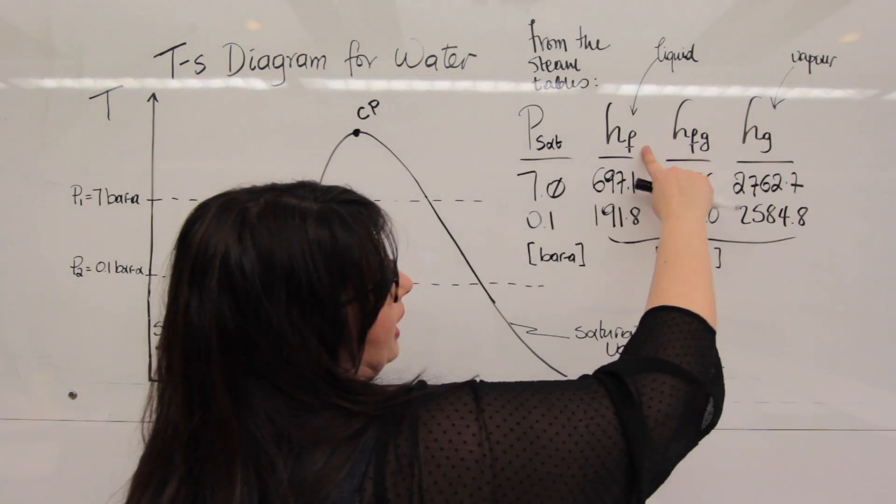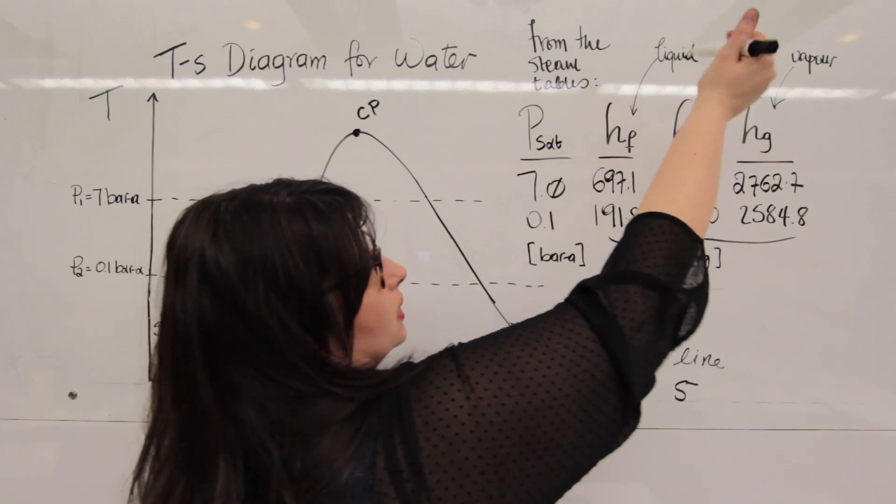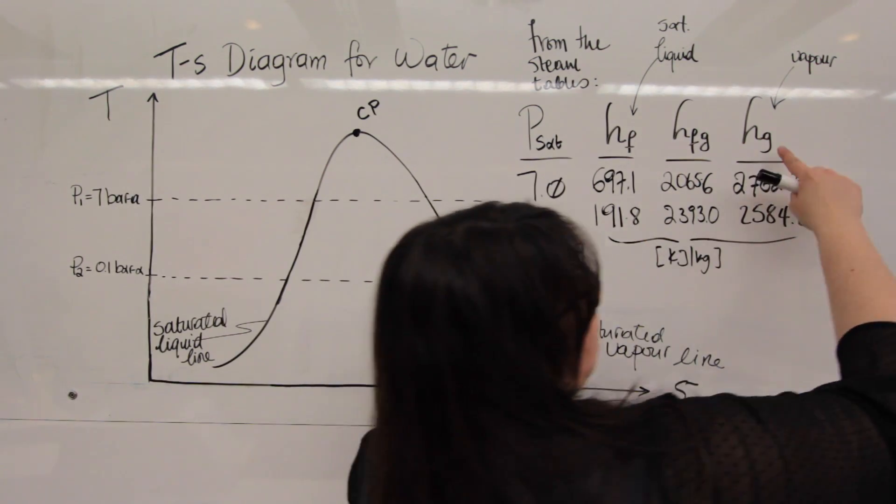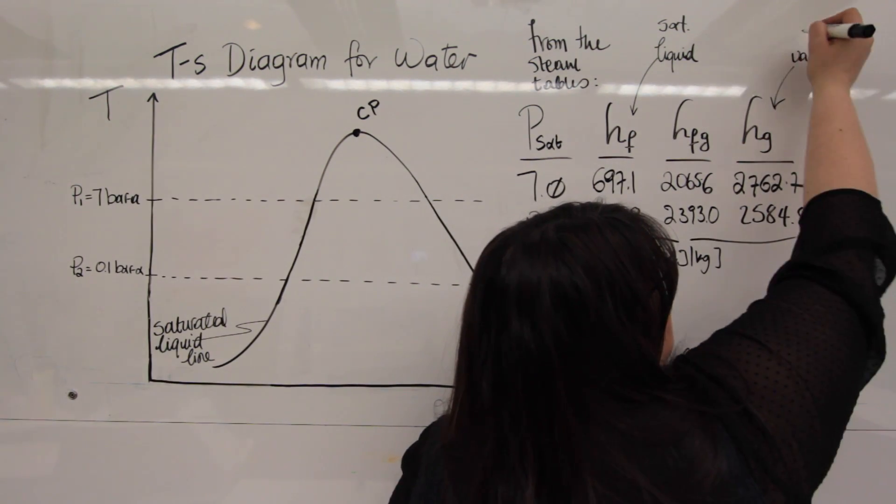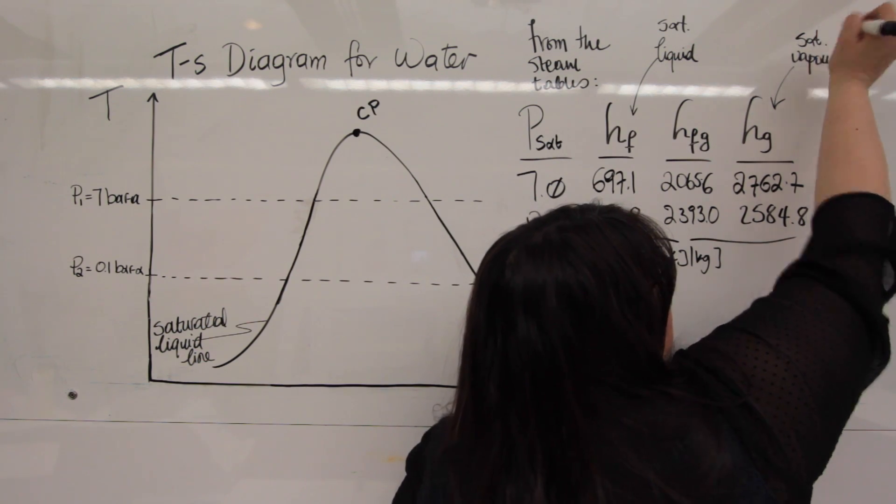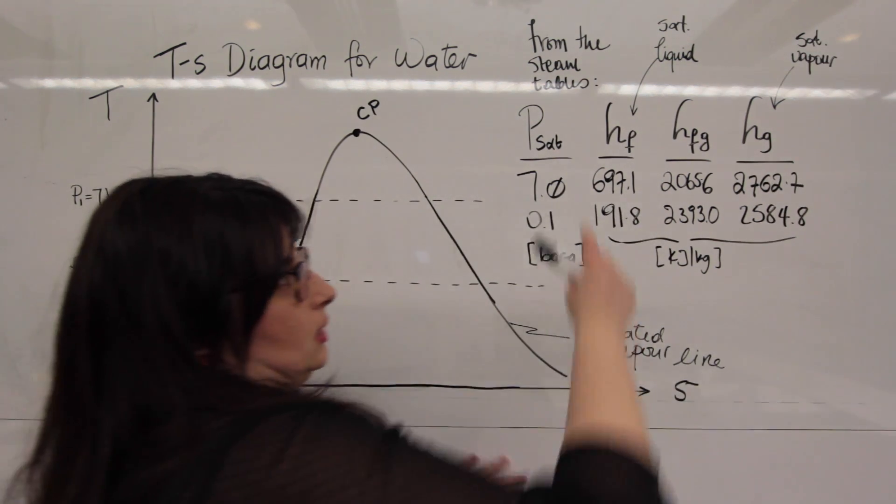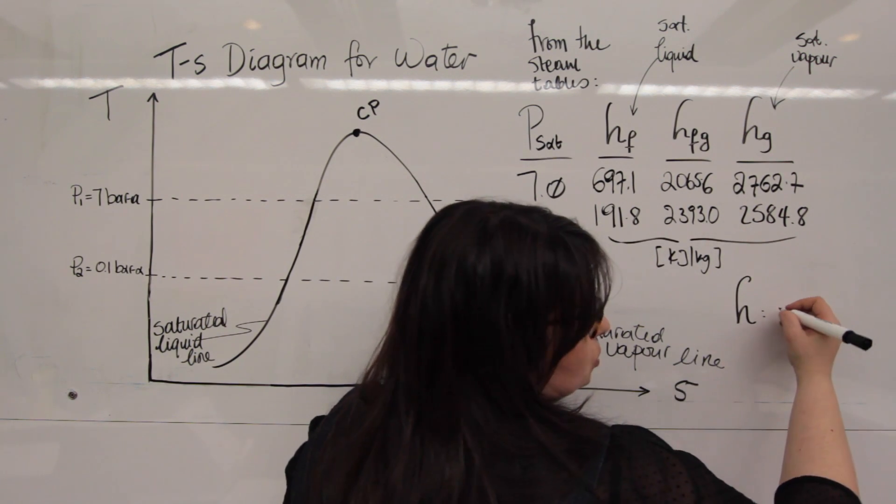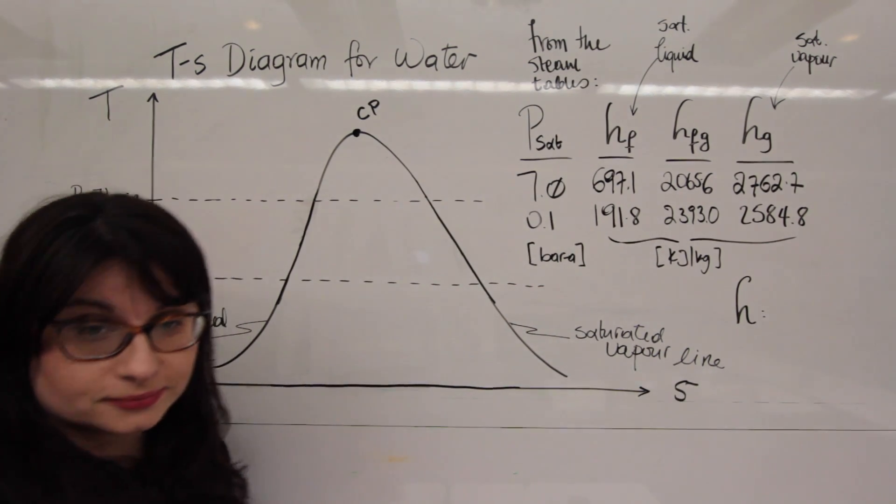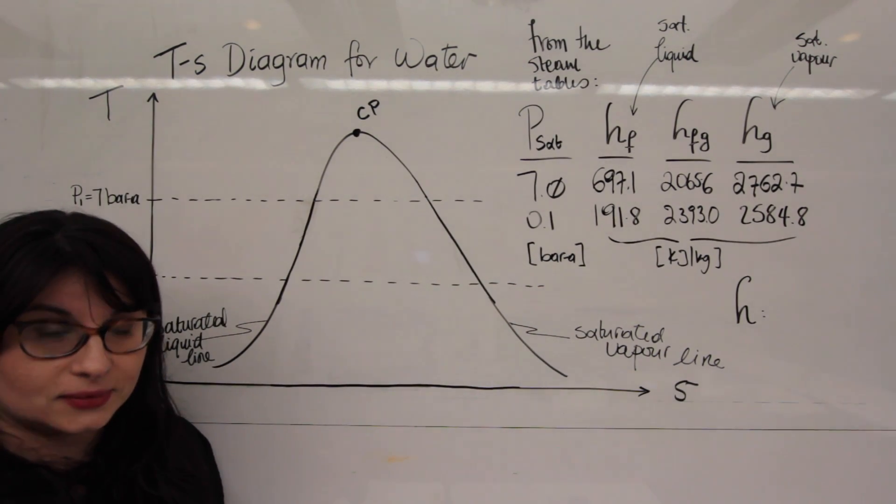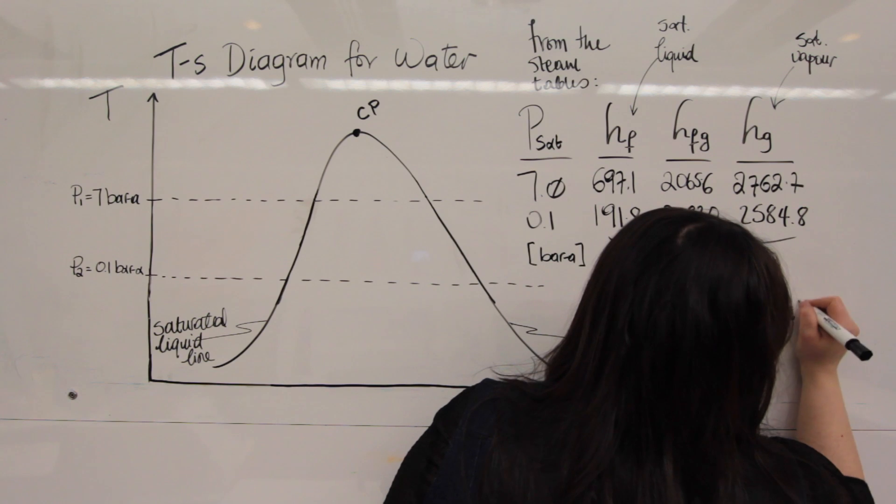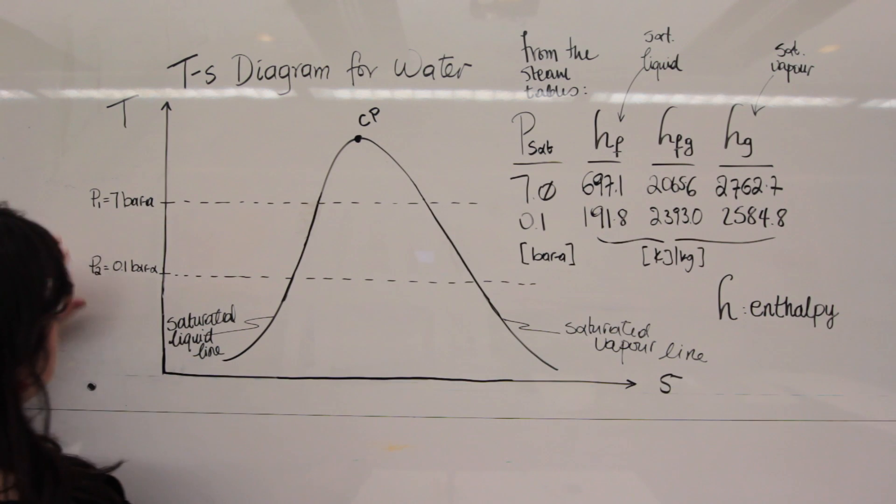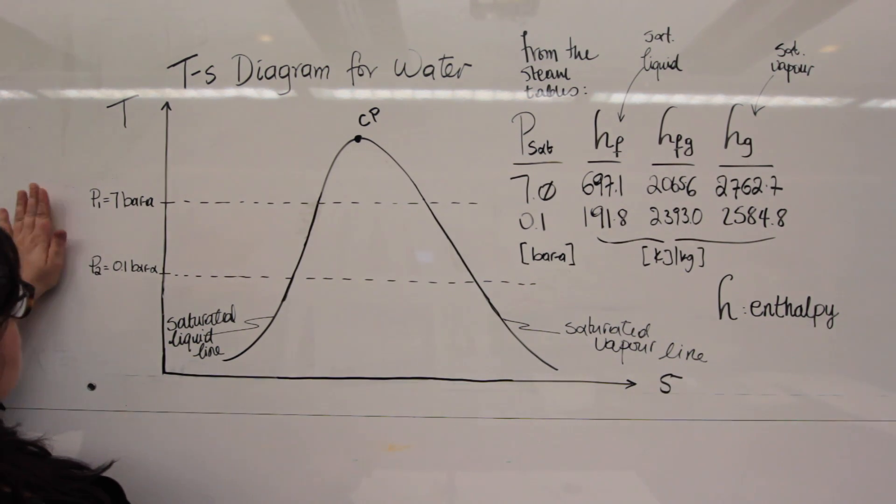we use F as a subscript to denote liquid. And actually, that's saturated. Remember that magic word? Saturated liquid. And we denote G. With G we denote saturated vapor. And what is H? Anton? What is H? Enthalpy. Enthalpy, that's correct. Well done. Enthalpy, right? And what is enthalpy? Well, it's energy. It's heat energy.